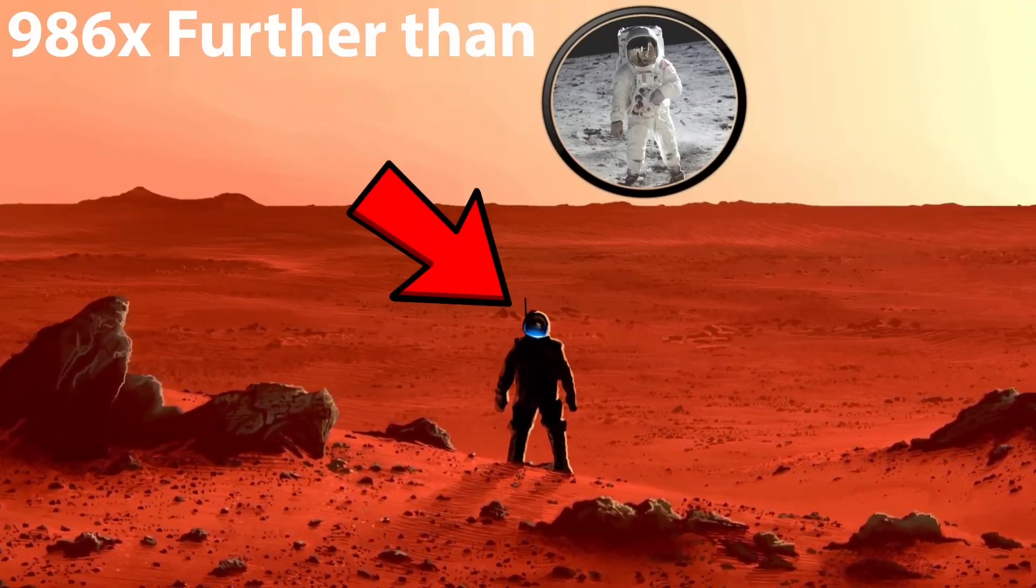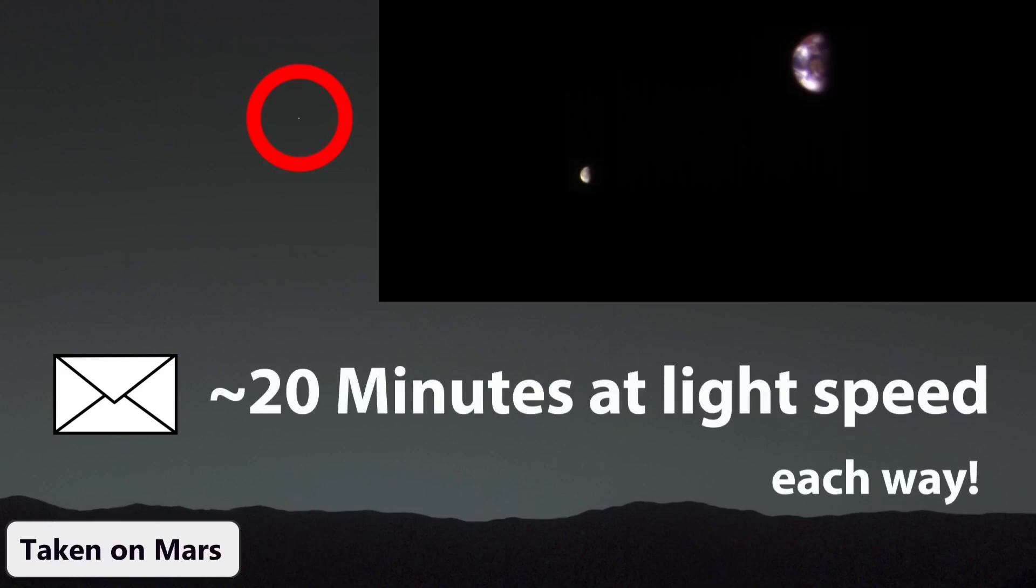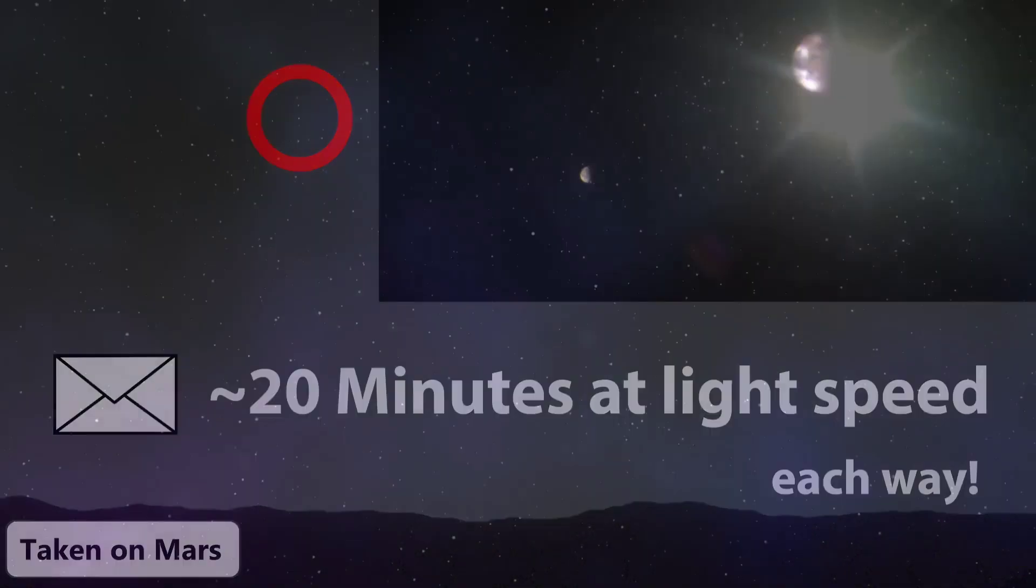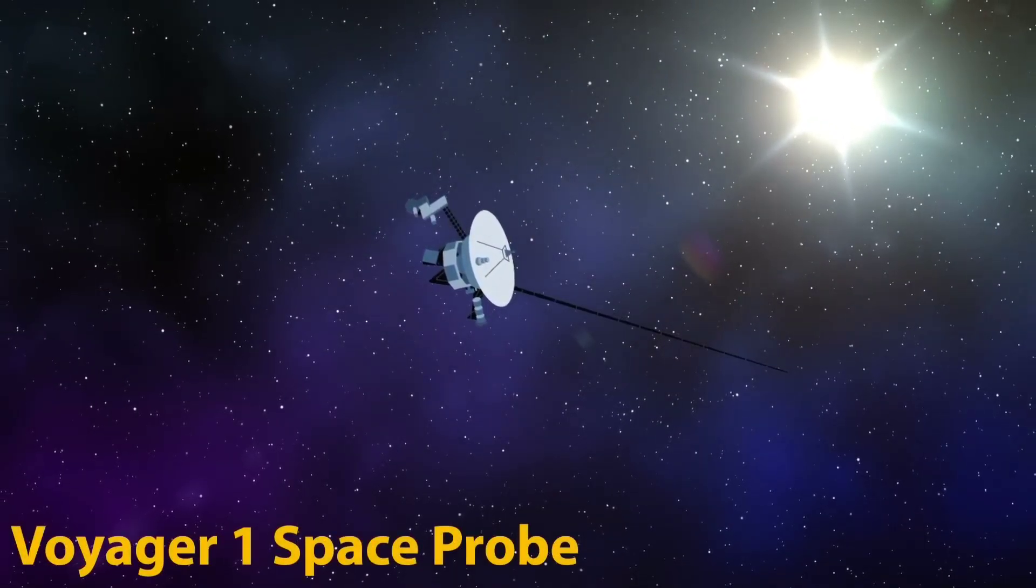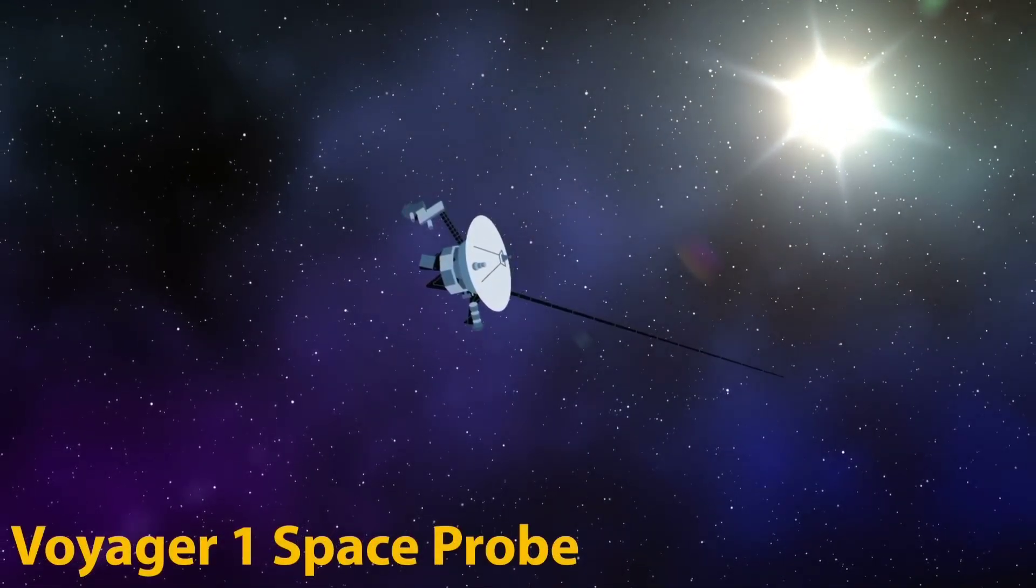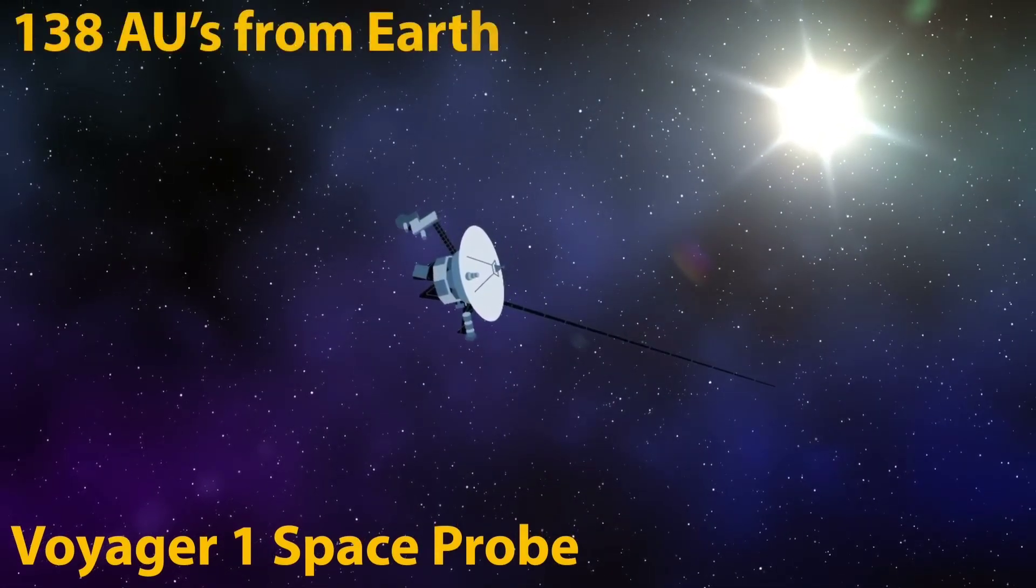That means that whenever humanity finally gets around to landing a human on the planet, the person will be 986 times further away from Earth than the astronauts who landed on the Moon were. In addition, the time delay for sending a message from Mars back to Earth isn't just two and a half seconds, it's actually more like 20 minutes each direction, which would render instant communication in the event of an emergency impossible.